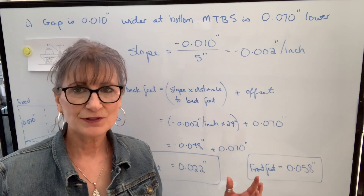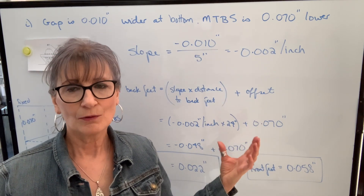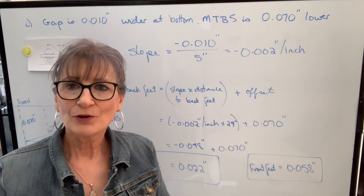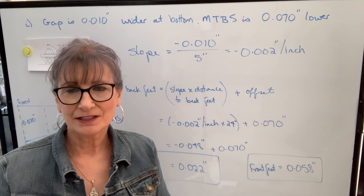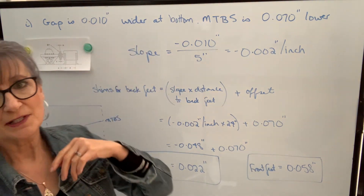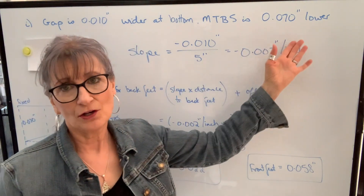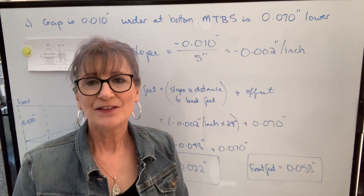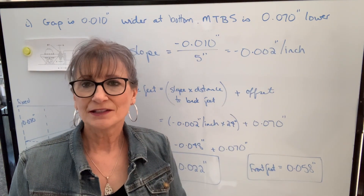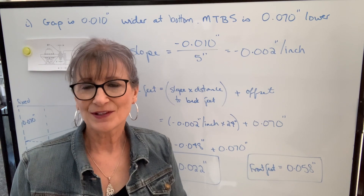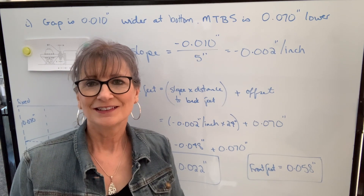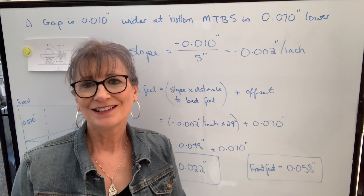This is the procedure for doing a one-step method. However, in this video I didn't talk about dial indicators — I gave you the angular misalignment and the offset misalignment directly. In the next video I want to talk about how we use dial indicators to get that information. So when you're ready, take a look.